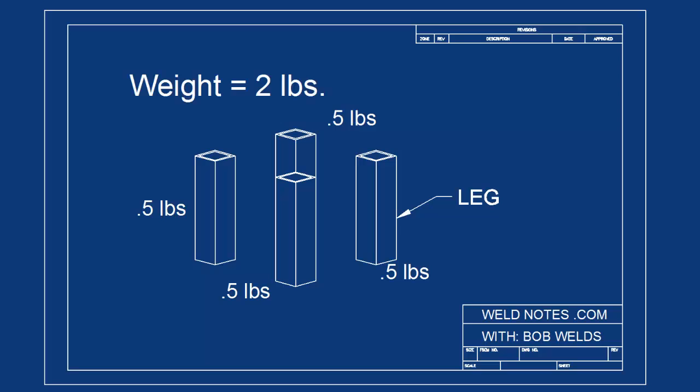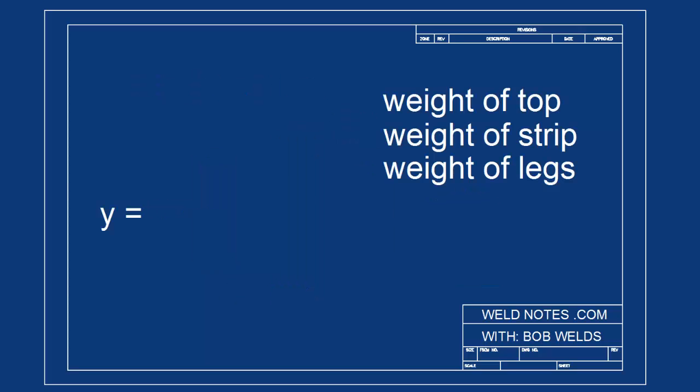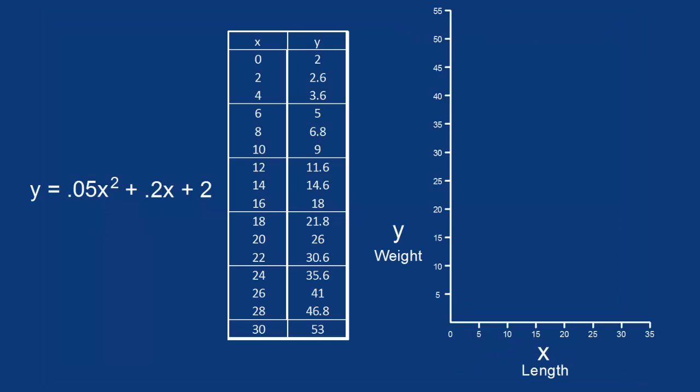So our quadratic equation would look like this: y equals 0.05x squared plus 0.2x plus 2. And this is what the graph would look like.